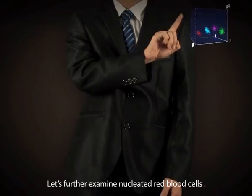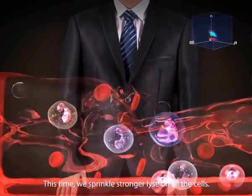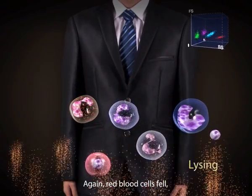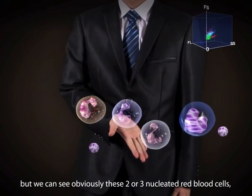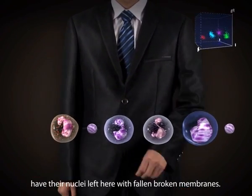Let's further examine nucleated red blood cells. This time, we sprinkle stronger lysis on all the cells. Again, red blood cells fell. But we can see, obviously, these two or three nucleated red blood cells have their nuclei left here with fallen, broken membranes.